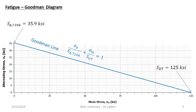At 720,000 cycles, we designed for a point around 5,000 psi alternating stress. Based on that, the factor of safety from the SN diagram is 35,900 over 5,650, giving 6.4. That's because our alternating stress was lower than our mean stress. We could have a very high mean stress and a very small alternating stress — we might be right up against the yield point — but the SN diagram has no way to tell us that.